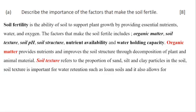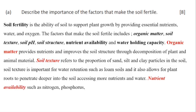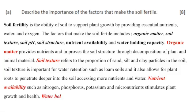When you look at water holding capacity, it gives the soil the ability to retain moisture for plant use, which is very essential for preventing nutrient leaching and ensuring plant hydration. Apart from that, we have the pH level. The pH level in the soil determines the availability of nutrients to plants, and most plants prefer a slightly acidic pH. This is how we can answer this question, and you get your 8 marks.